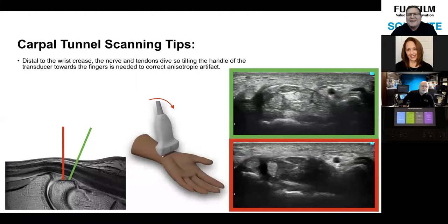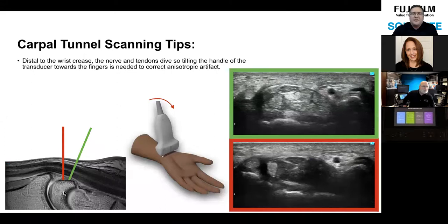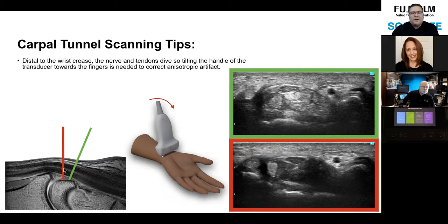Now let's get into carpal tunnel scanning tips. Here's the pisiform and scaphoid — the most common error is staying 90 degrees to the skin because beginners are told to stay perpendicular to their structure, forgetting that the carpal tunnel contents dive away from the probe. What you have to do is angle the transducer handle toward the fingers, which should brighten up the internal contents. You can then see the superficialis layer and the profundus layer separating clearly.